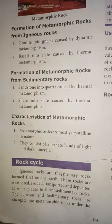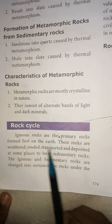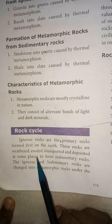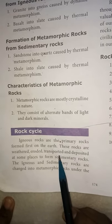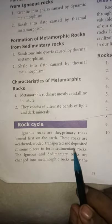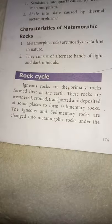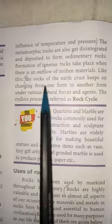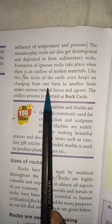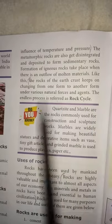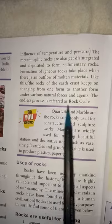Now we will see the rock cycle. Igneous rocks are the primary rocks formed first on the earth. These rocks are weathered, eroded, transported, and deposited at some places to form sedimentary rocks. The igneous and sedimentary rocks are changed into metamorphic rocks under the influence of temperature and pressure. The rocks of the earth's crust keep on changing from one form to another under various natural forces and agents. This endless process is referred to as the rock cycle.